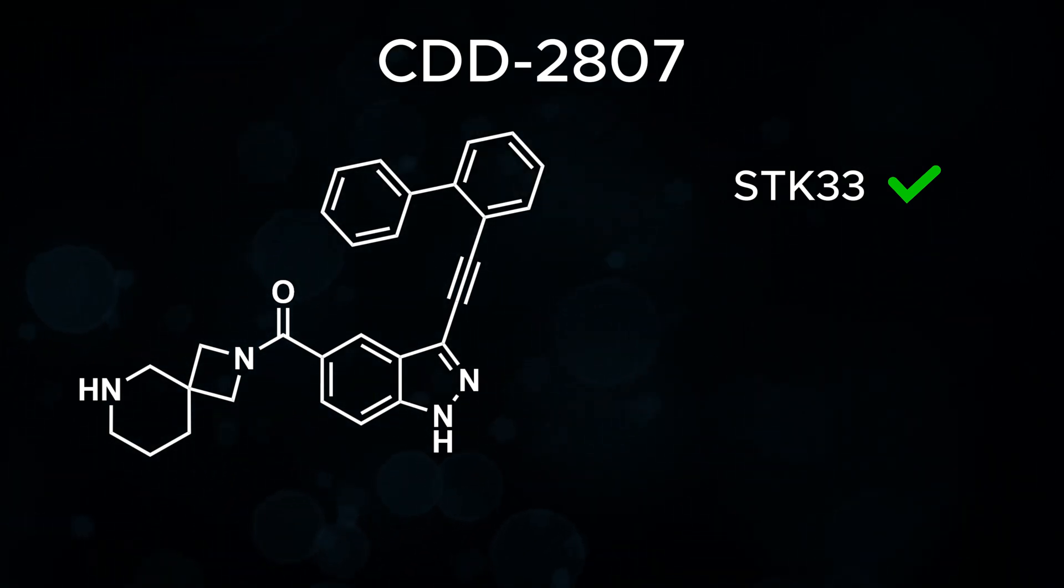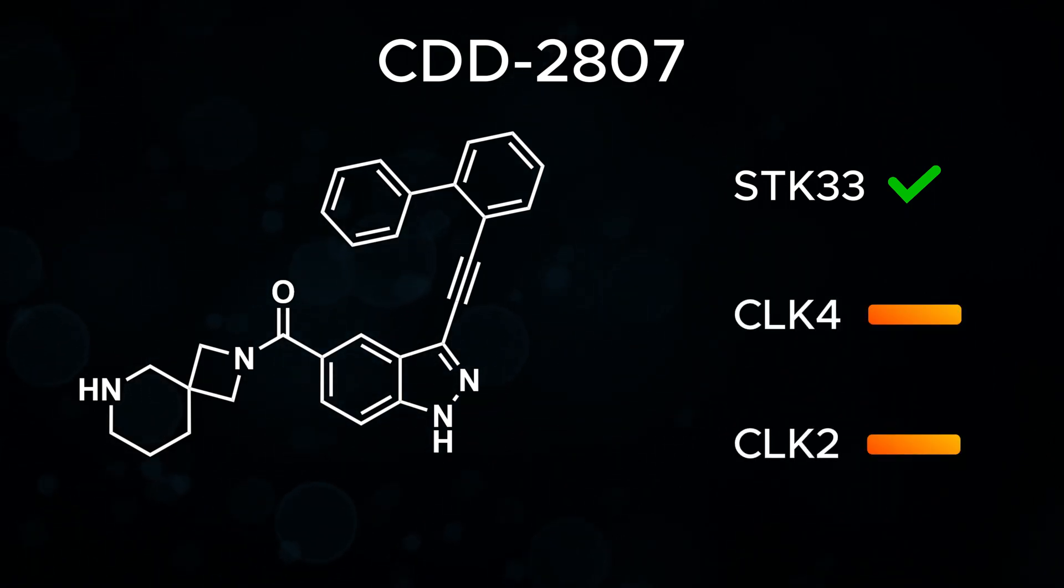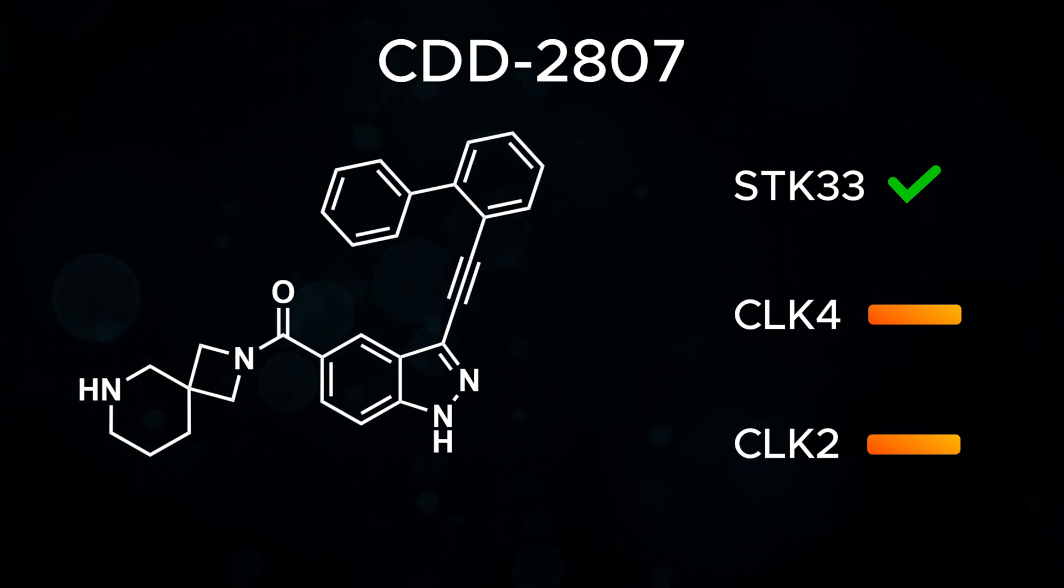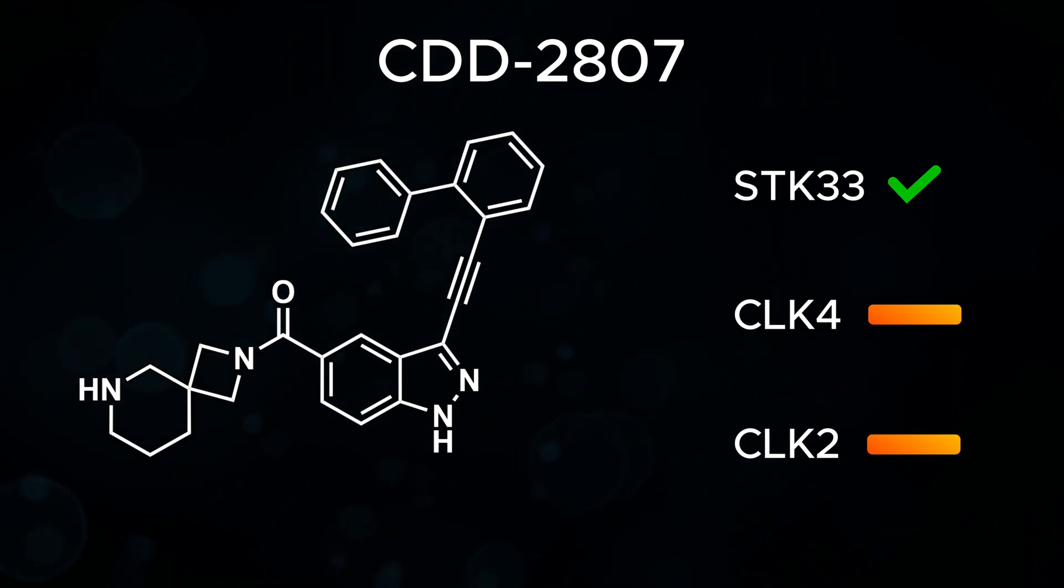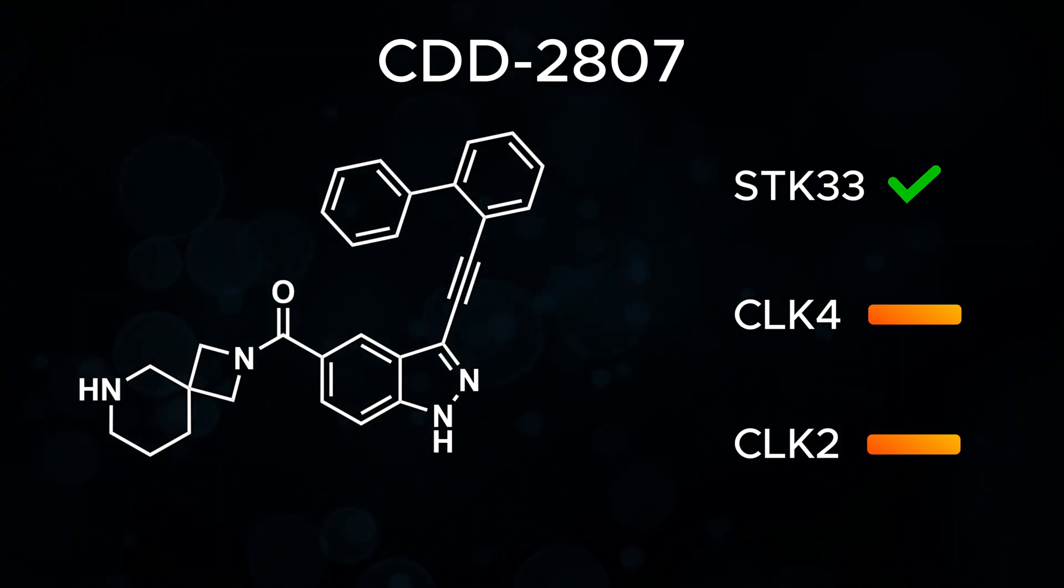It also showed some binding to other kinases, such as SLK-4 and SLK-2, which have similar binding sites to STK-33. CDD-2807 still showed a nine-fold or greater selectivity towards STK-33 over other kinases.